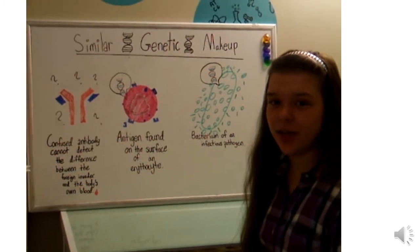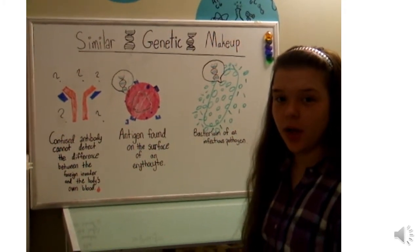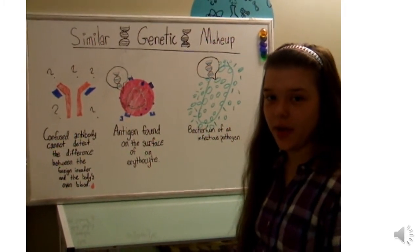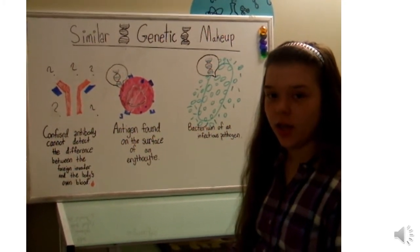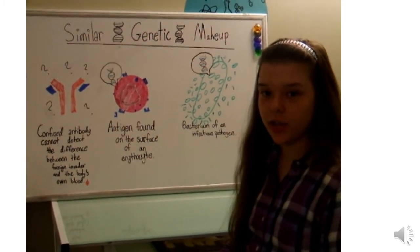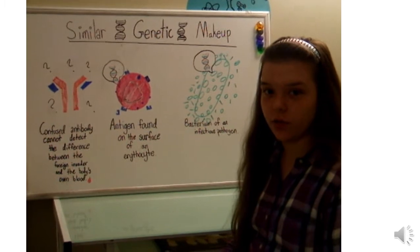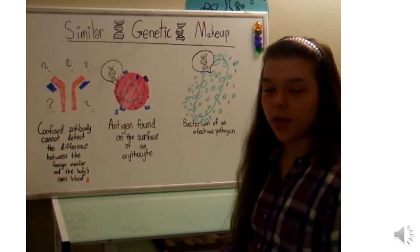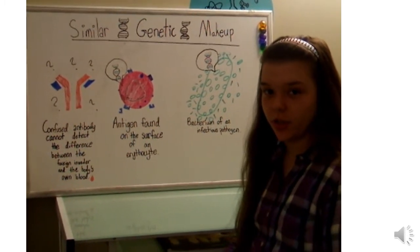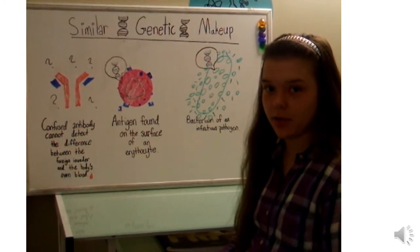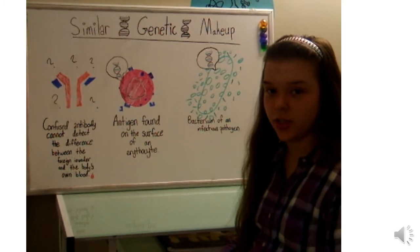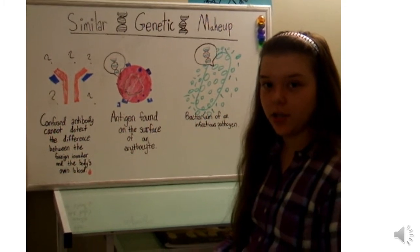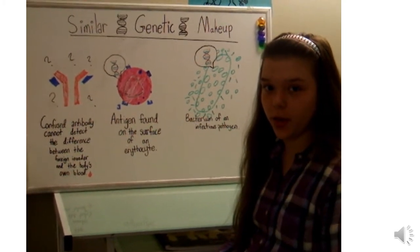The similar genetic makeup of the bacterium and the antigen can cause a reaction in the body known as rejection. However, this similar genetic makeup in certain antigens can actually be helpful for the body.